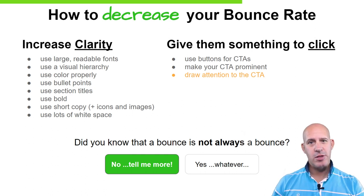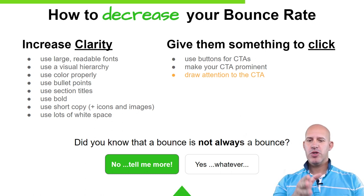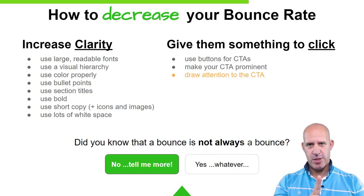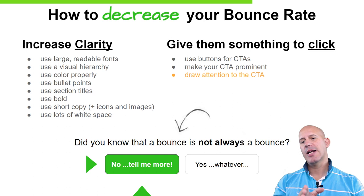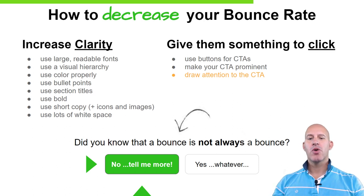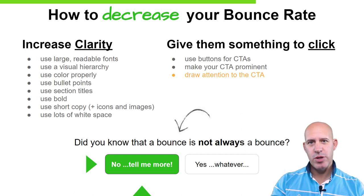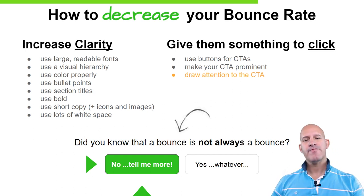Draw attention to your call to action. We have these buttons there, but there isn't much visual information drawing attention to them. What I do is add a visual item right there to grab attention and point it to the buttons — to the calls to action. You see you can make this even better if you use more than one visual item.